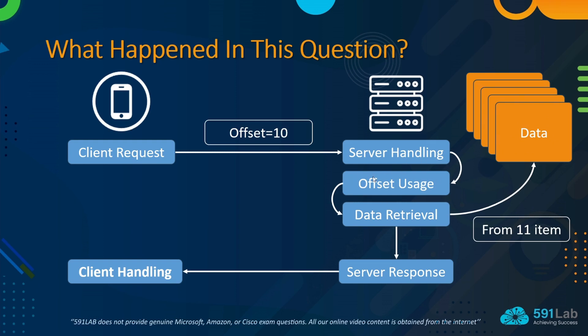The next step is offset usage. The server uses the offset to determine where to start fetching results from the collection. For example, if the offset is 10, the server will start fetching results from the 11th item in the collection. After this, the server does data retrieval — retrieving the subset of results starting from the 11th item. This would involve querying a database, accessing a cache, or any other data retrieval mechanism, depending on the server's architecture and implementation.